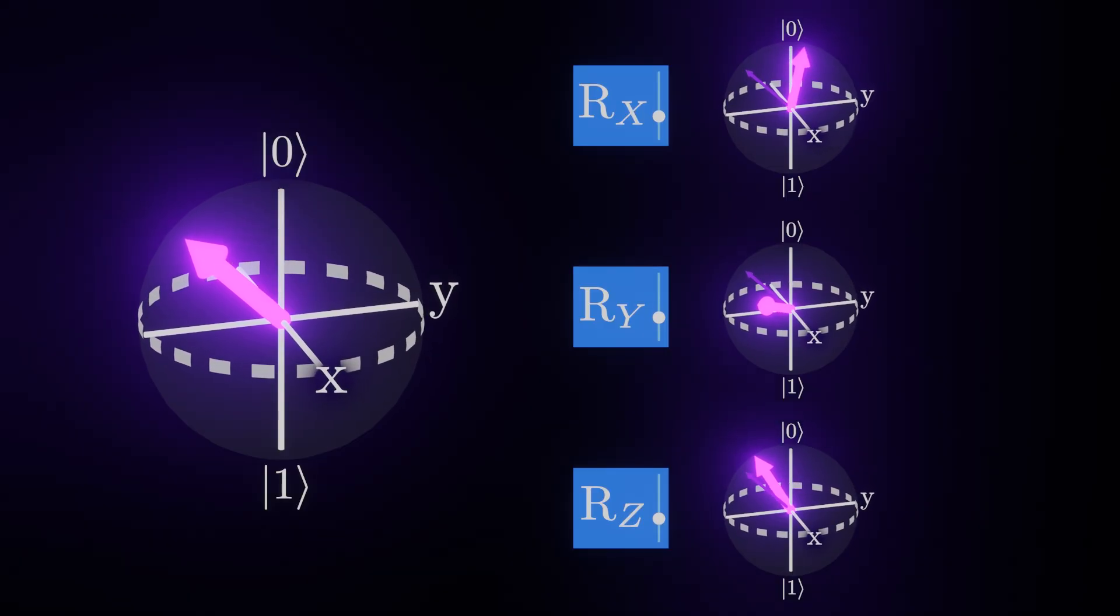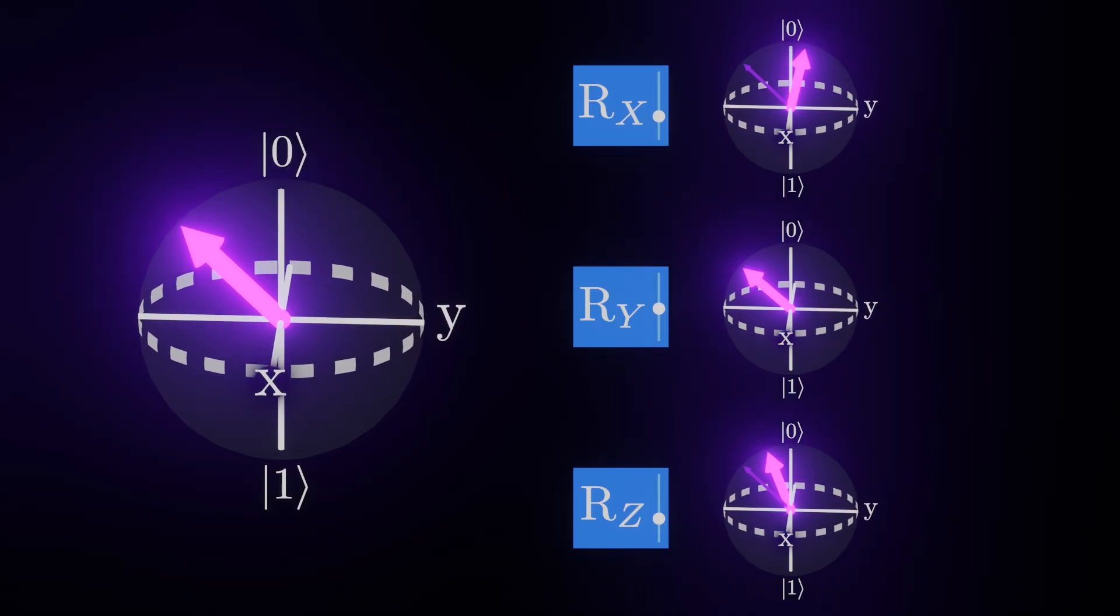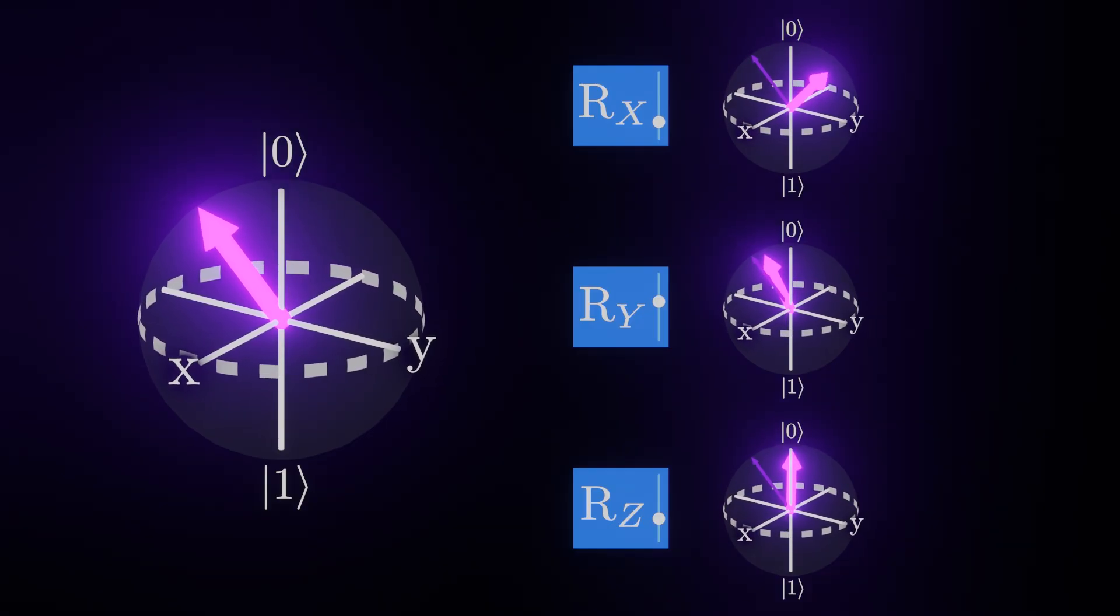For example, we could describe an RY gate that rotates by half a radian, or maybe an RX gate that rotates by negative 3 radians.